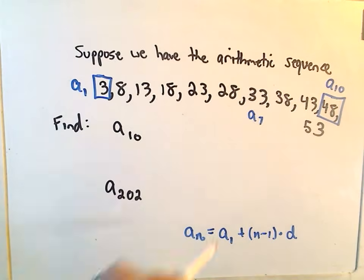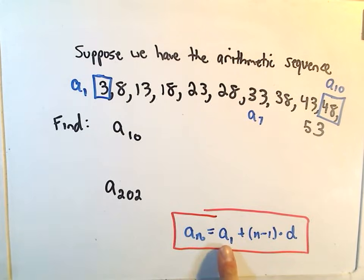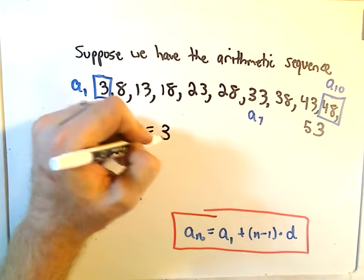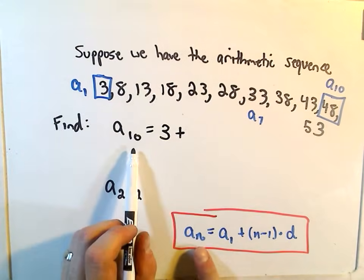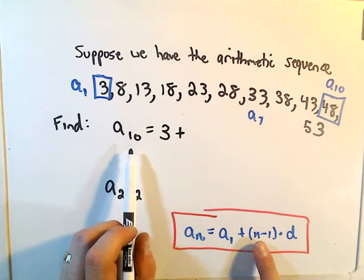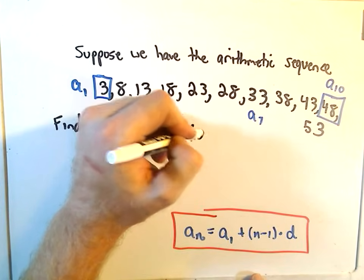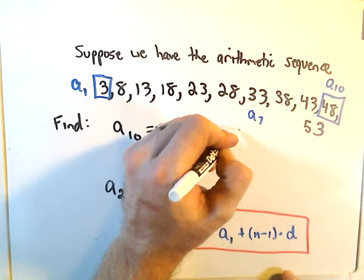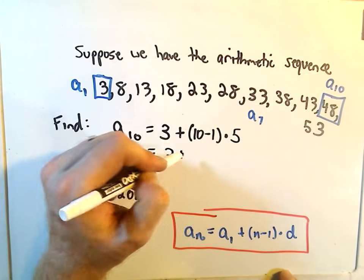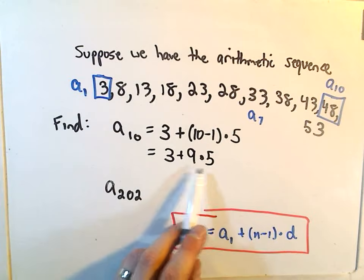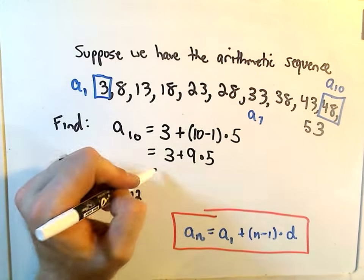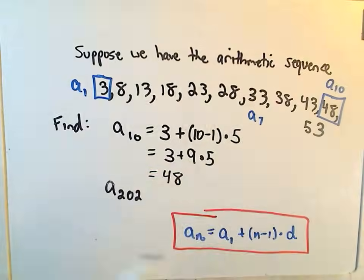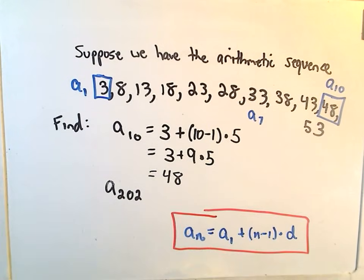Okay, if we use our formula down here, again, this is what we're plugging in. It says you need to plug in the first term, and our a_1 in this case is the number 3. So I'm going to plug that in. It says whatever number is downstairs, you subtract 1 away from it. So since we have a 10 here, we'll take 10 minus 1, and then we multiply that by our d value, which we said is 5. So really, we're going to get 3 + 9·5. Well, 9 times 5 is 45. 45 plus 3 is going to give us 48. And hey, that's what we said you would get if you actually write them all the way out.